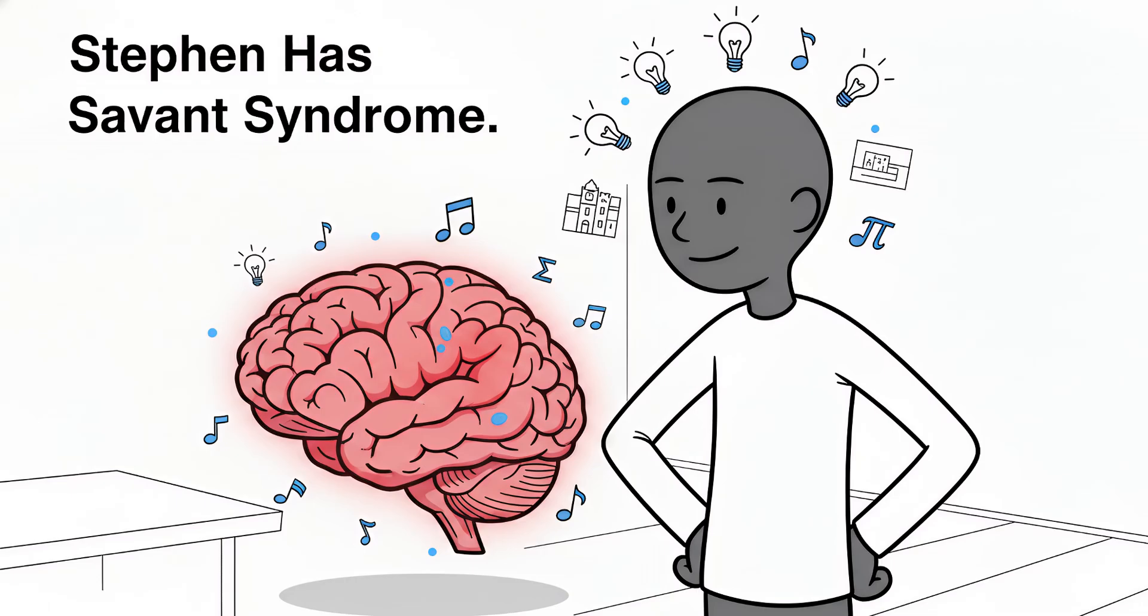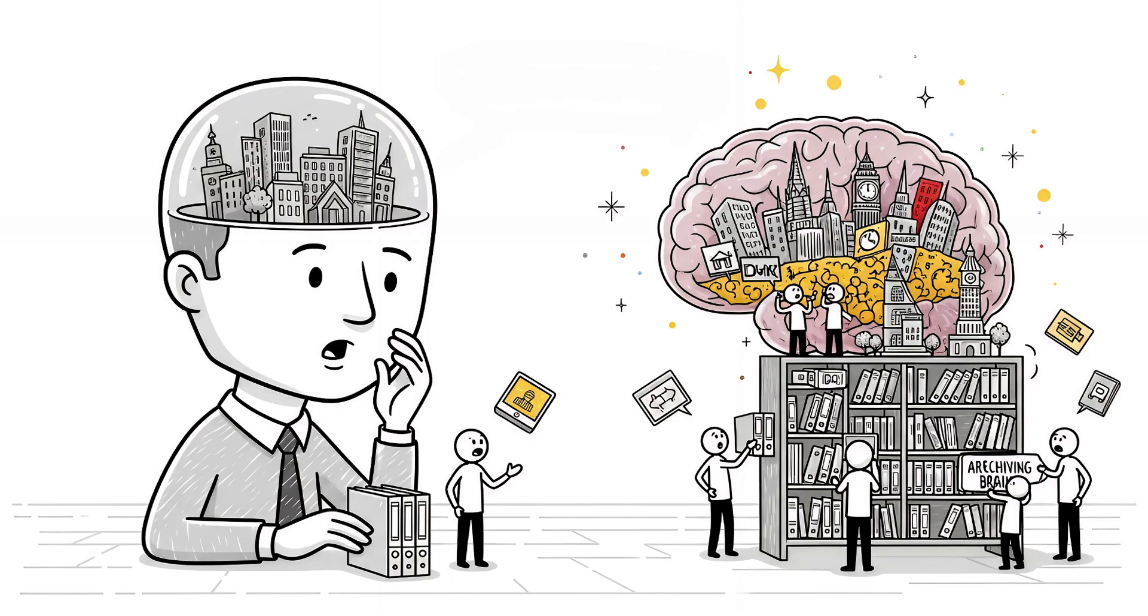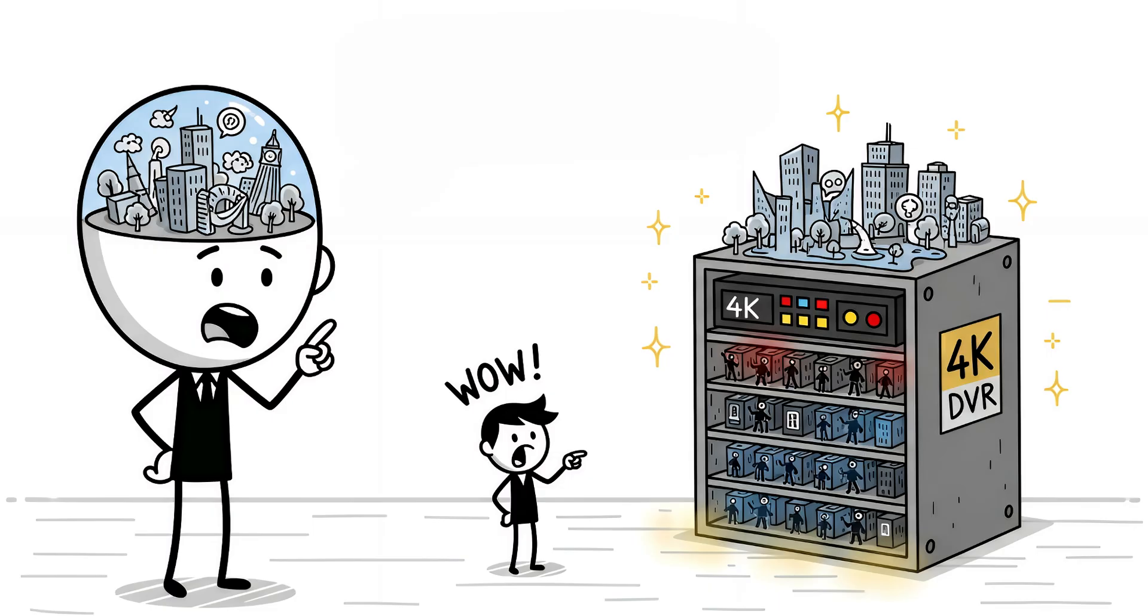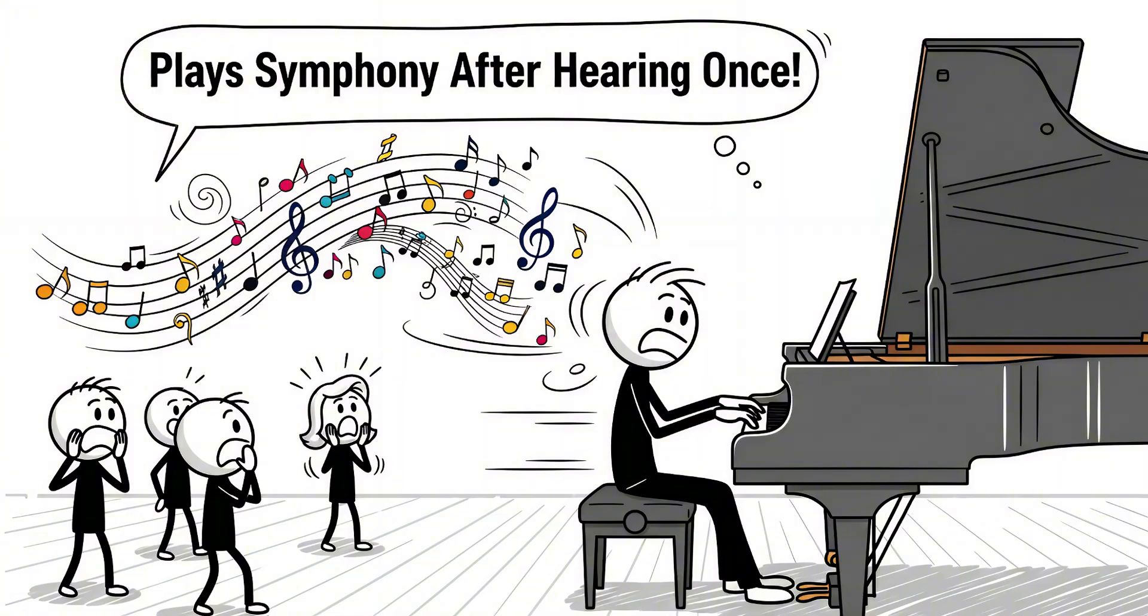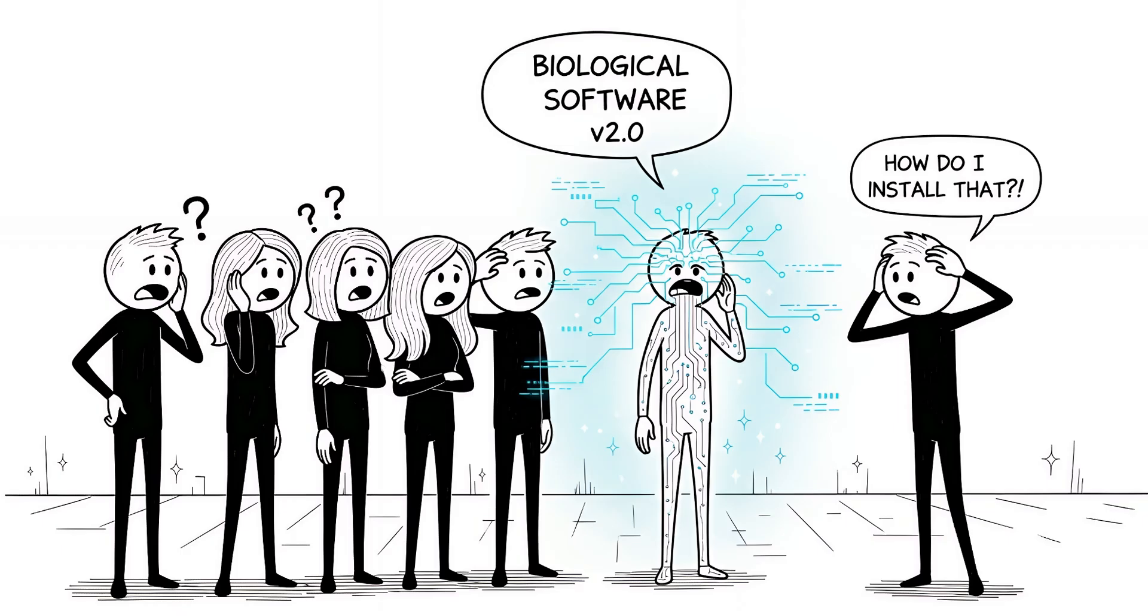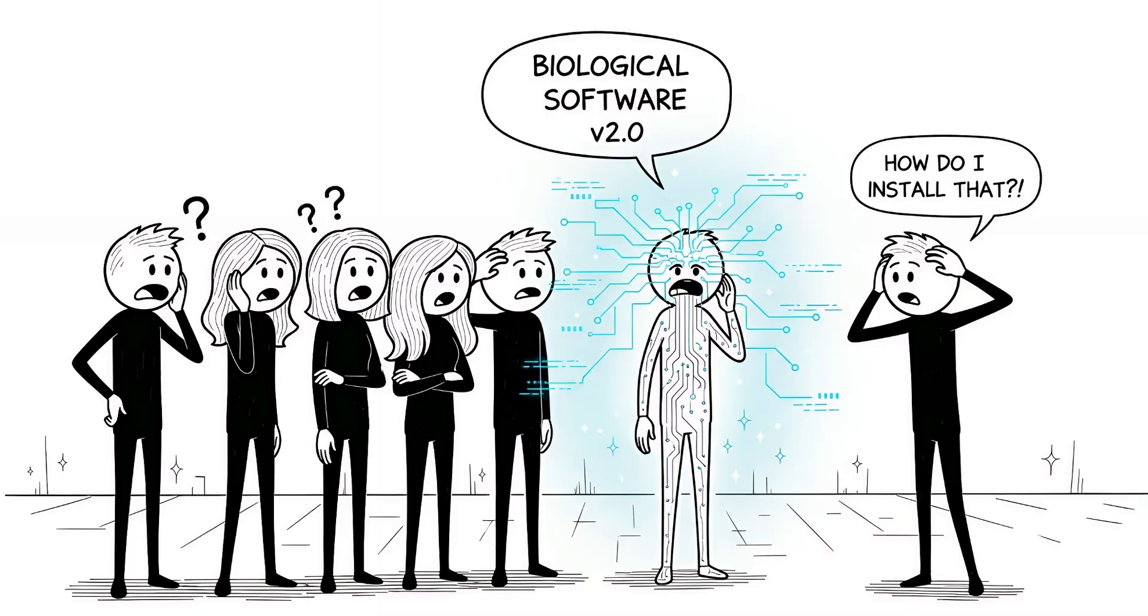Stephen has savant syndrome. His brain doesn't just store images, it archives them like a 4K DVR that never deletes. People with this condition can calculate cube roots faster than a calculator, play a symphony after hearing it once, memorize a phone book in an hour. They're running biological software the rest of us can't install.